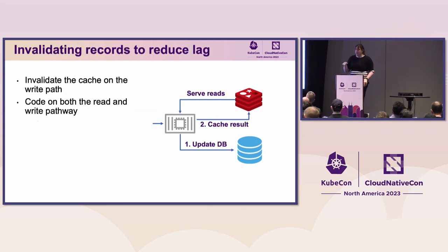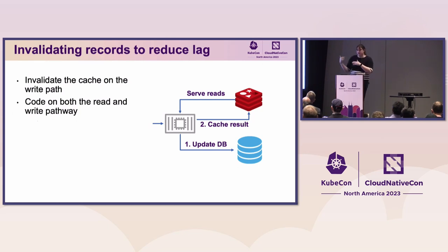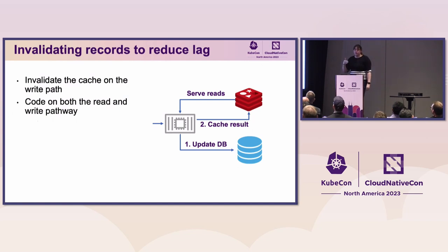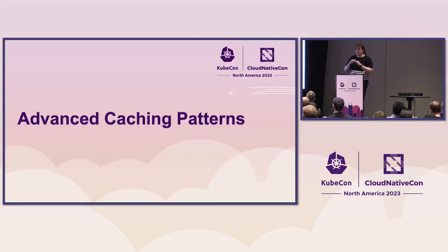The last caching fundamental is how to do invalidations — proactively kicking things out of the cache. This is done in one of two ways: through a write-through caching pattern where we re-put everything back in the cache, or we just kick it out and let lazy loading re-populate it. The key highlight here is that now we have to make changes on both the read and write path. These two systems might be built by different teams, and they have to coordinate to keep the cache coherent.